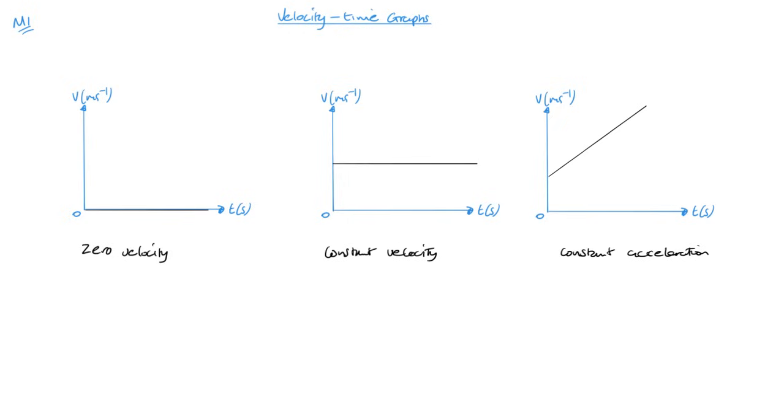Okay, it's quite straightforward, but it's just a case of remembering the differences between dealing with velocity time graphs and displacement time graphs. Now the acceleration is the gradient of the line, the rate of change of velocity.